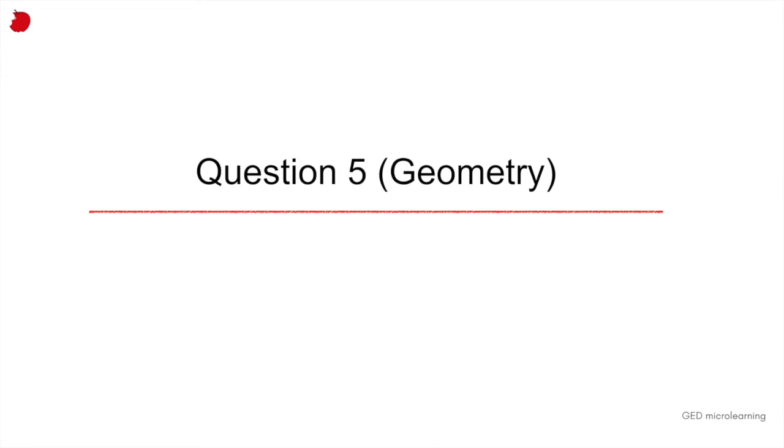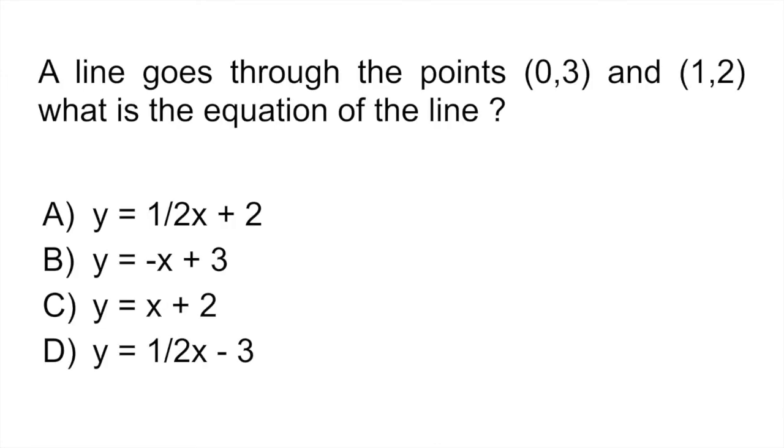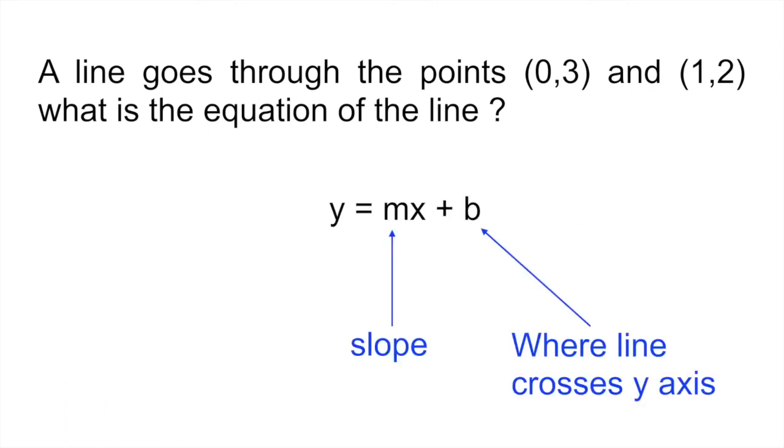Question 5 is our geometry question of the day. It says a line goes through the points 0, 3 and 1, 2. What is the equation of the line? If you remember, the equation of the line is y equals mx plus b, where the first part of the equation represents the slope. And the second part, the b, represents where the line crosses the y-axis. So how do you solve this? Well, the first thing that you want to do is you want to find the slope.